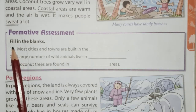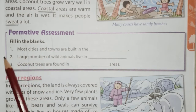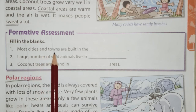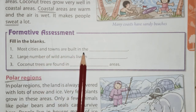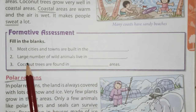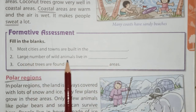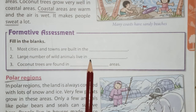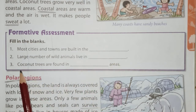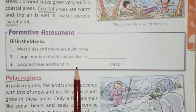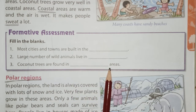Let's solve these fill in the blanks. Most cities and towns are built in the plains. A large number of wild animals live in forests. Coconut trees are found in coastal areas.